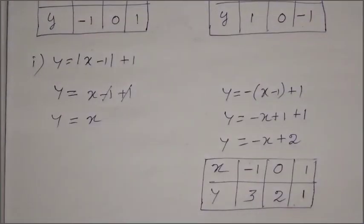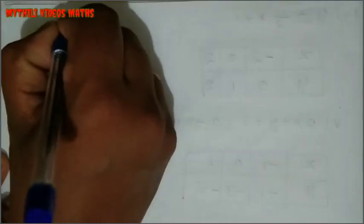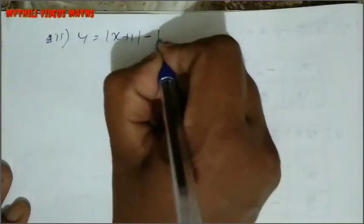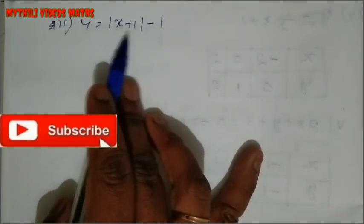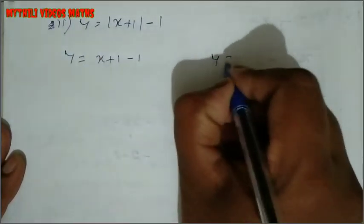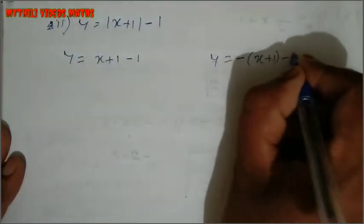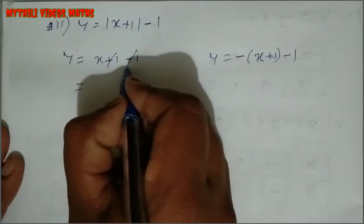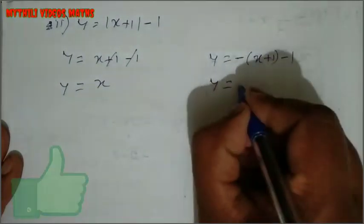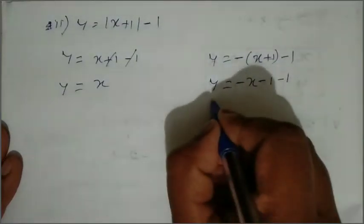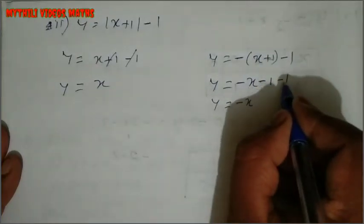Now second subdivision: y equal to modulus of x plus 1 minus 1. For positive value: y equal to x plus 1 minus 1, the plus 1 and minus 1 cancel, so y equal to x. For negative value: y equal to minus of x plus 1 minus 1, which gives y equal to minus x minus 1 minus 1, so y equal to minus x minus 2.